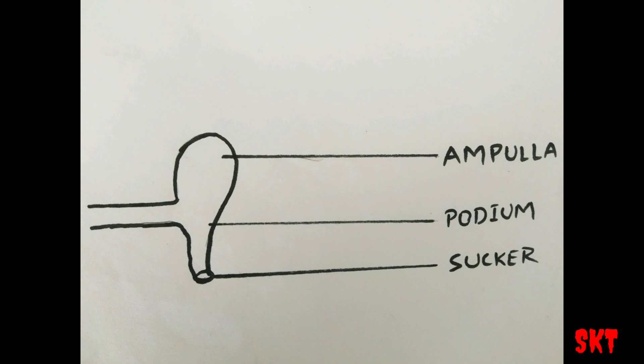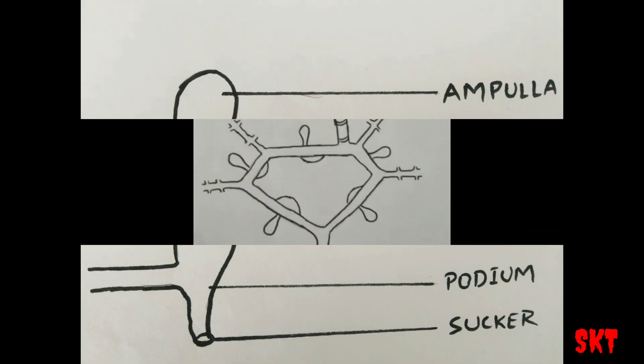Ampulla is a muscular sac-like structure. Commonly, there is only one ampulla but in some, it may be bi-lobed. An ampulla constricts and produces a tube-like structure called podium and podium ends with sucker. Through the sucker, the water goes out. The whole tube feet expresses outwards from the body of a starfish.